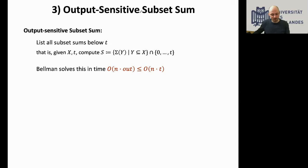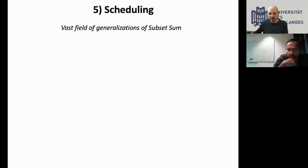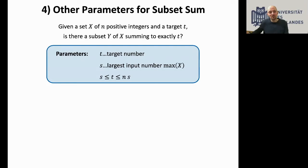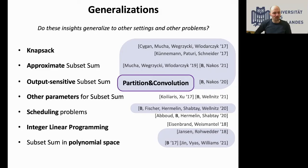There are many other open directions: output-sensitive algorithms, other parameters such as the largest input number (it's open whether one can get linear dependence on this parameter), and generalizations to scheduling problems and integer linear programming.